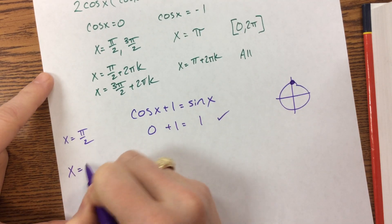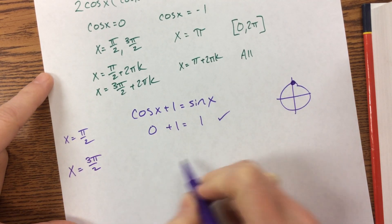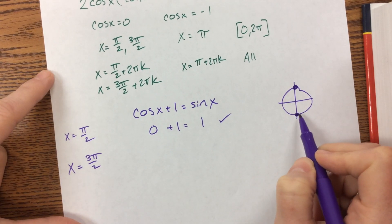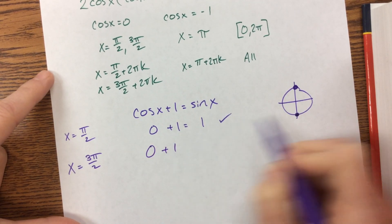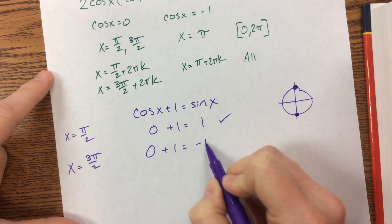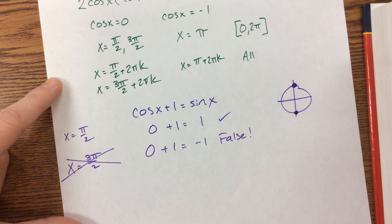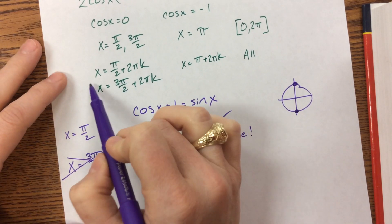When I plug in x equals 3 pi over 2, cosine of 3 pi over 2, that's down here. And the cosine is still 0 plus 1, but the sine value is now negative 1. This is a false statement. So we have to eliminate that answer or that family of answers.